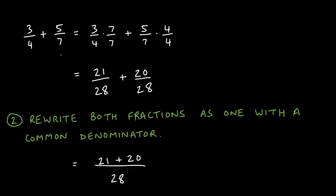I multiply the first fraction 3 over 4 by 7 over 7, and I multiply the second fraction 5 over 7 by 4 over 4. The reason I'm allowed to do this is that 7 divided by 7 is 1. I can multiply anything by 1 without changing it. So multiplying 3 over 4 by 1 just writes it in a different format, and multiplying 5 over 7 by 4 over 4 doesn't change it because I'm only multiplying by 1.